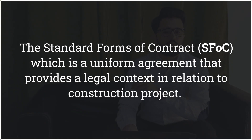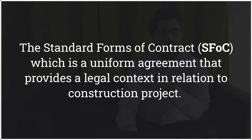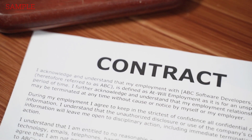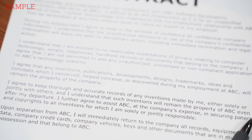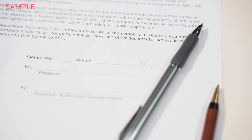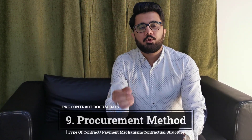What if during a construction project the client comes up with new requirements and the contractor denies, saying it's out of scope? Or imagine a contractor is not taking responsibility for tasks they should have completed long ago. That's why it is very important to sign a standard form of contract — a uniform agreement that provides a legal context in relation to the construction project. In this contract, everything is predetermined by authorized professionals, client representatives, and other parties. Commonly used contracts include FIDIC, GCC, GCT, and the New Engineering Contract.